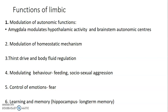Alcohol means just the social aspect of life. So the limbic system helps to modulate the autonomic functions — for example, the amygdala will modulate hypothalamic activity and brainstem autonomic centers. We also have modulation of homeostatic mechanisms to maintain the body at a good environment in which its physiological functions can perform normally. Then thirst drive and body fluid regulation — that's also part of modulating the activity of the hypothalamus. We have modulation of behavior like feeding and social-sexual aggression, control of emotions like fear, and learning and memory. The hippocampus is responsible for long-term memory.